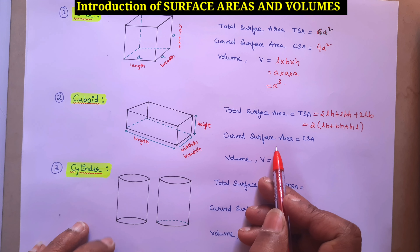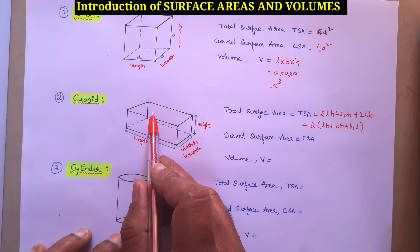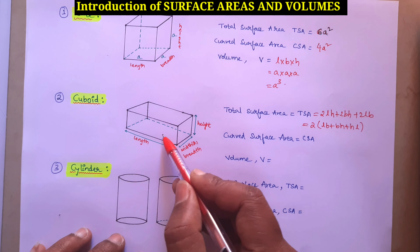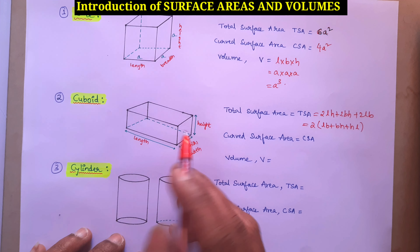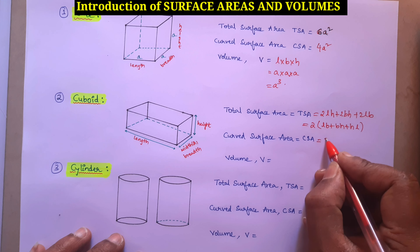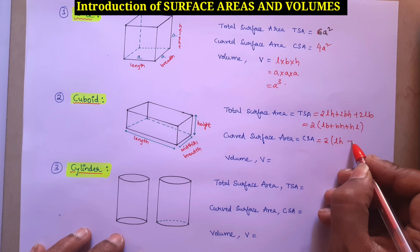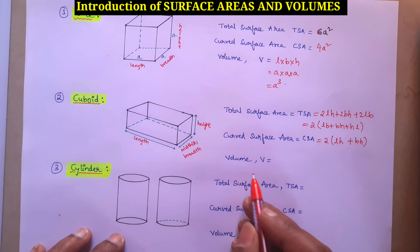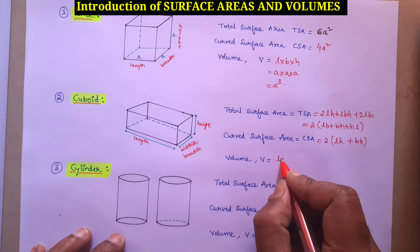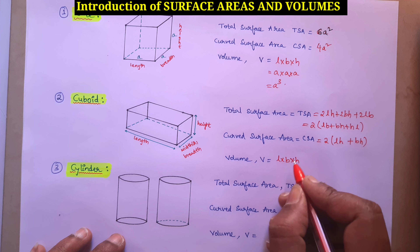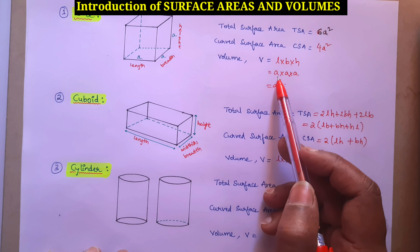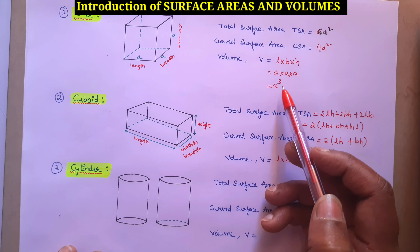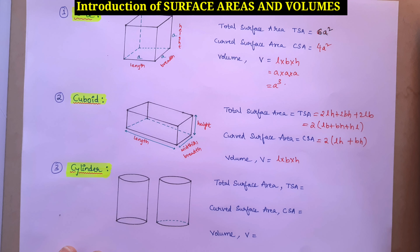To find curved surface area of a cuboid, we remove top and bottom and keep only front, back, left and right. That formula is 2(LH + BH). When it comes to volume, volume is L × B × H. In a cube all lengths are equal (A × A × A), but here it is L × B × H.